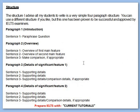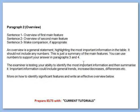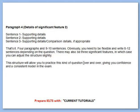Regarding structure: you should write an introduction, an overview, significant figure 1, and significant figure 2. You are not supposed to write a conclusion in academic writing task 1. The introduction can be a paraphrasing of the question wording. The other paragraphs are the overview — or summary — and the two significant figures.